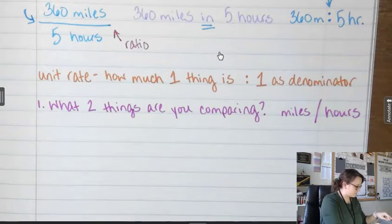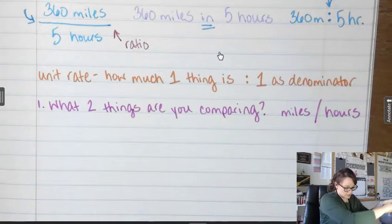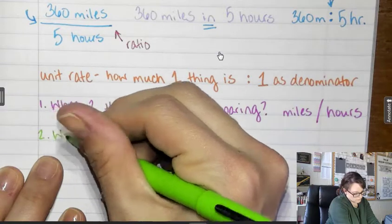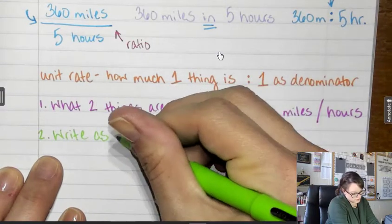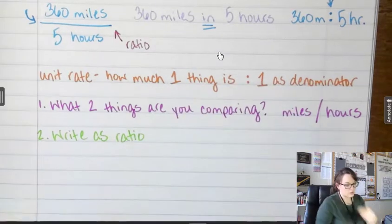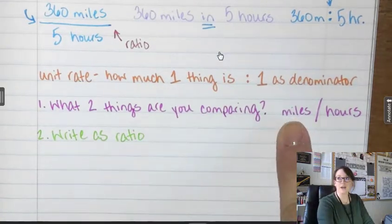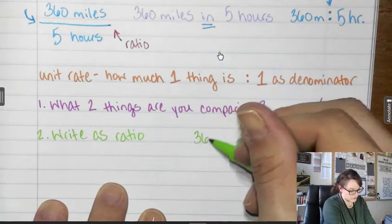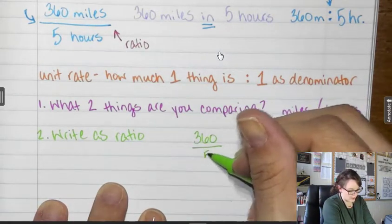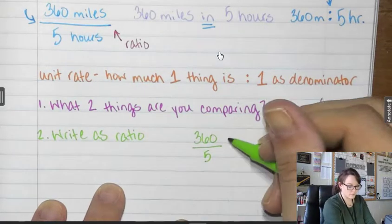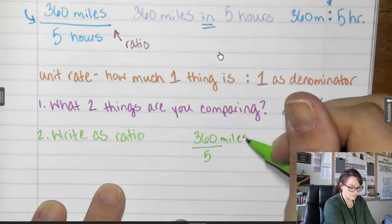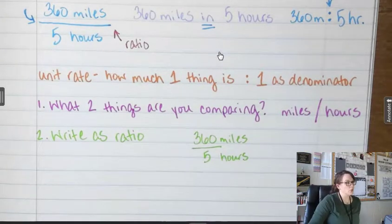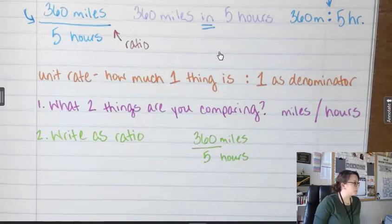Next, I need to write it as a ratio. If I'm comparing miles to hours, I am going to write it as miles to hours: 360 miles over 5 hours. Use labels.